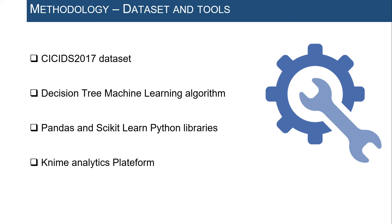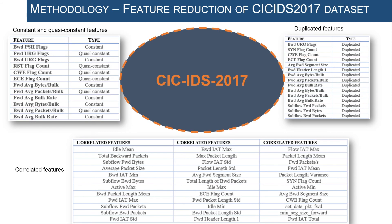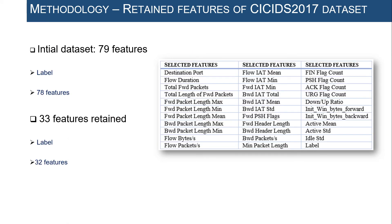For the experimentation part, we have not yet tested the whole system and focused on the construction of the network baseline. We used the CICIDS 2017 dataset provided by the Canadian Institute of Cyber Security. This dataset is reliable and represents modern network traffic. Pre-processing was performed using the Python libraries Pandas and Scikit-learn, and validation of the decision tree classification algorithm was carried out using the Knime Analytics Platform.